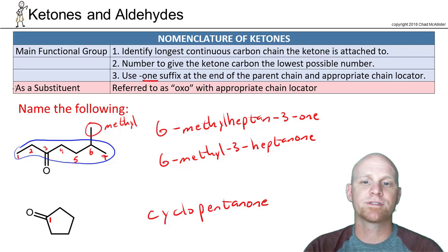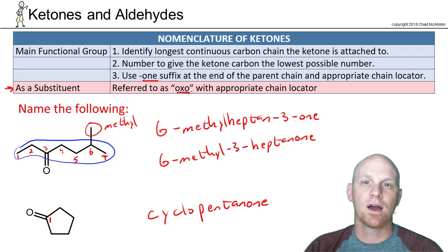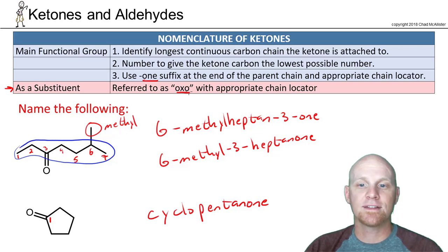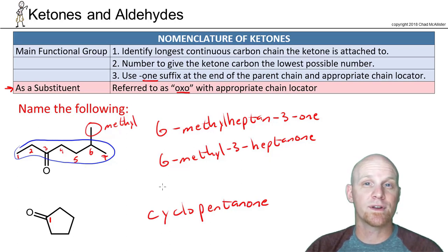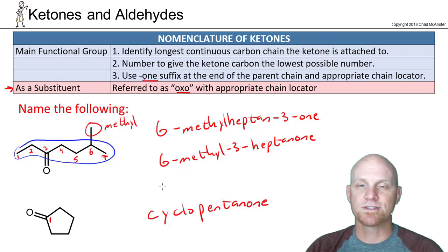If the ketone is not your most important functional group, you name it as an oxo-substituent. It turns out aldehydes get priority over ketones — so if you have both an aldehyde and a ketone, you name the compound as an aldehyde and refer to the ketone as a substituent. We'll see one of those examples shortly.